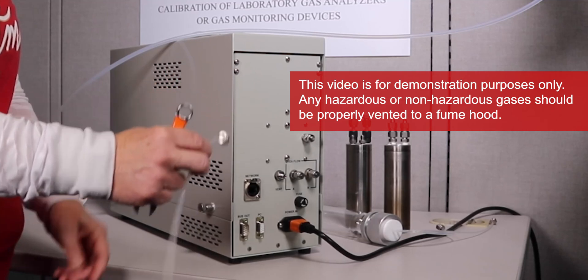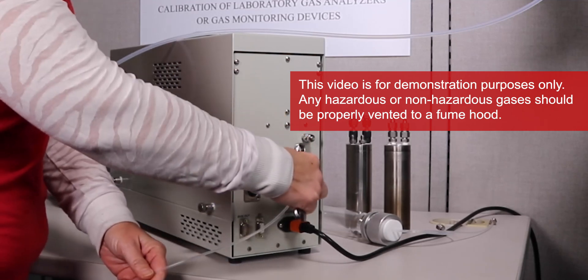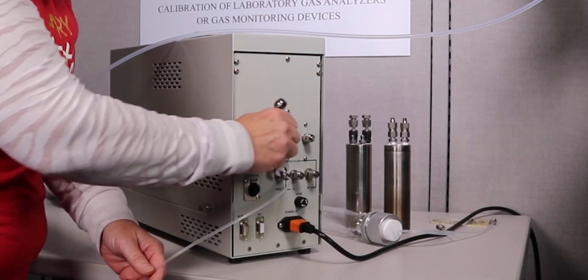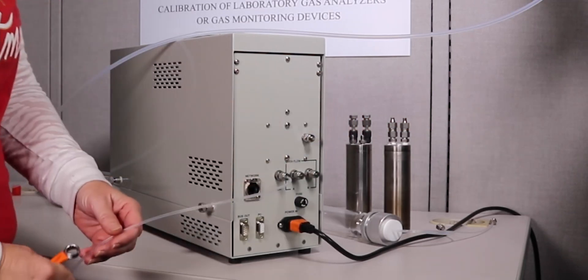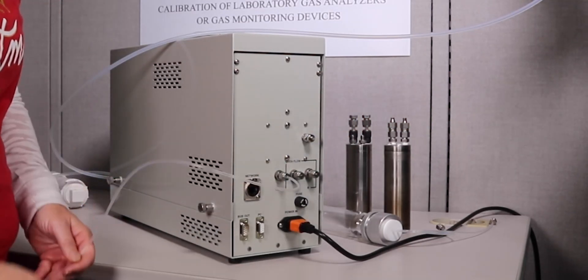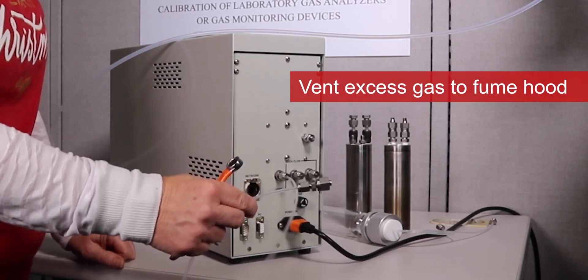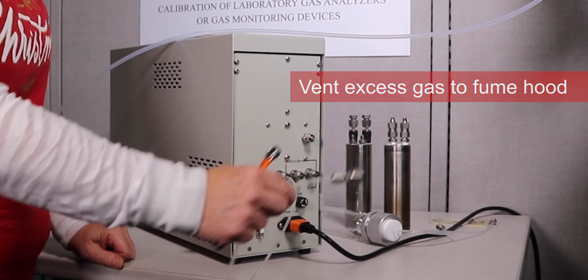We're going to take some Teflon eighth inch tubing and connect that to our vent port so that as we're operating the FlexStream base module and creating our calibration gas, when we go to the standby mode we'll actually vent any excess flow to a nearby fume hood.